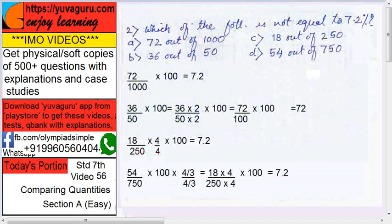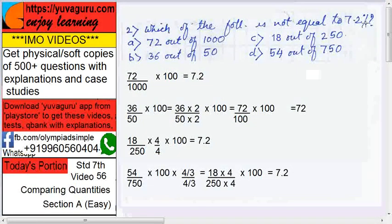Which of the following is not equal to 7.2 percent? Now out of these four, here 72 out of 1000. So 72 upon 1000, we want percent so multiply by 100. So into 100, two zeros cancel, one zero from here, and this becomes 7.2. So this is okay.